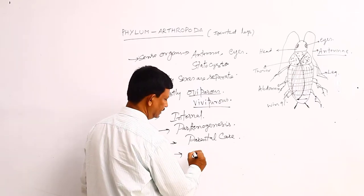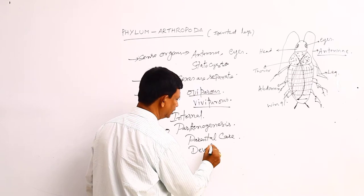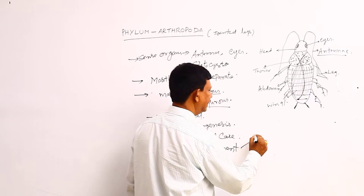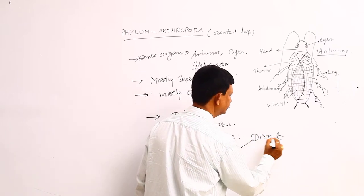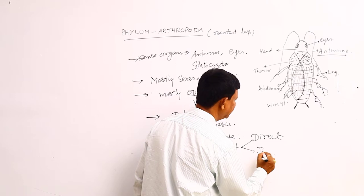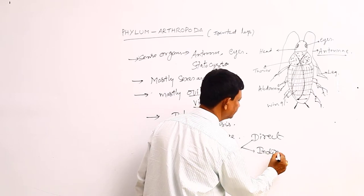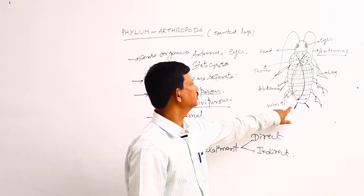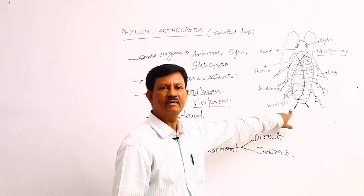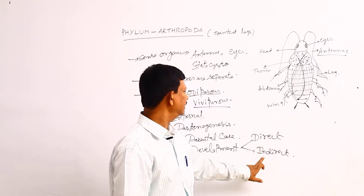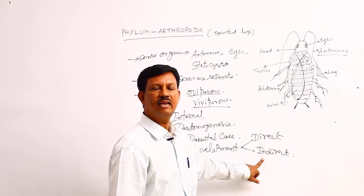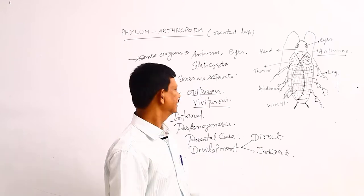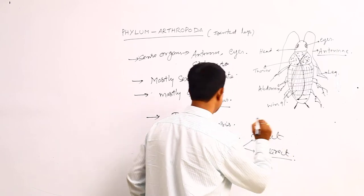Development is direct or indirect — both are present. Direct development means there is no larval form; example is the cockroach, where development is direct and there is no larval form. But in some animals, development is indirect. For example, butterfly — in the life history of the butterfly, there are different types of larval forms present. That is why indirect development is also present in some animals.